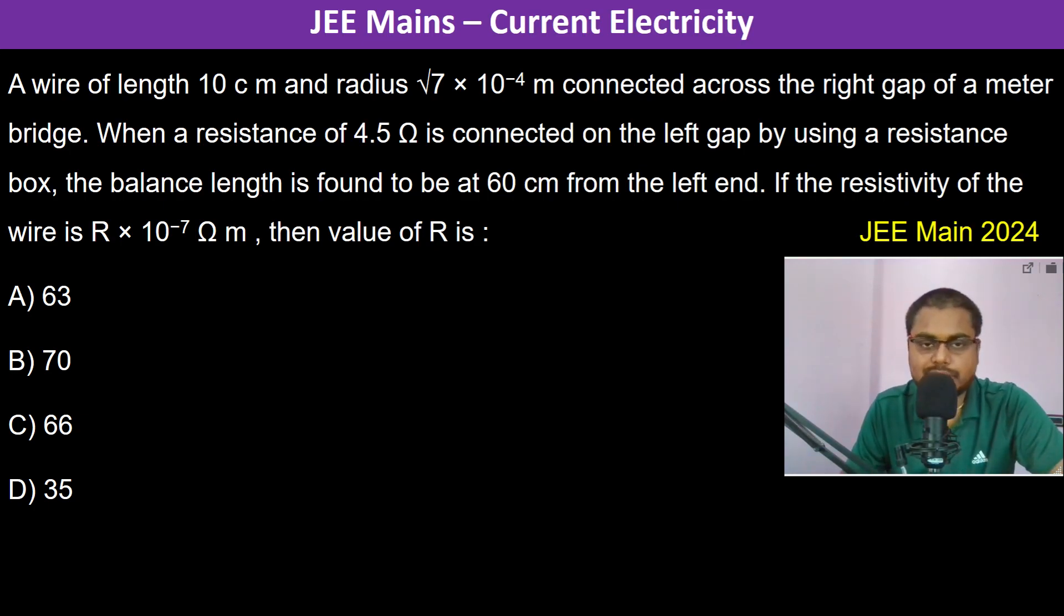A wire of length 10 centimeter and radius √7 × 10^-4 meter is connected across the right gap of a meter bridge.